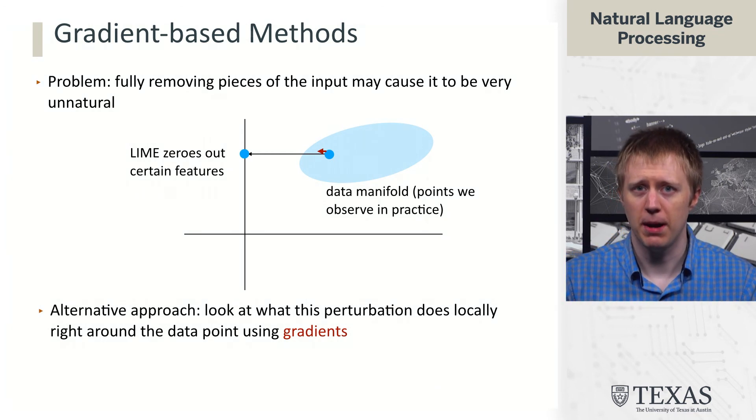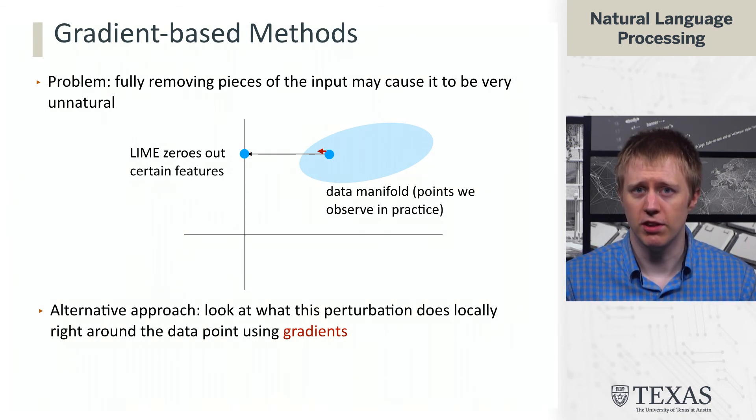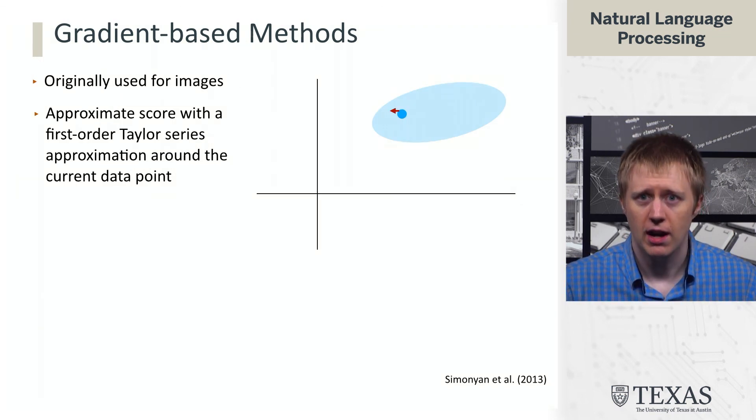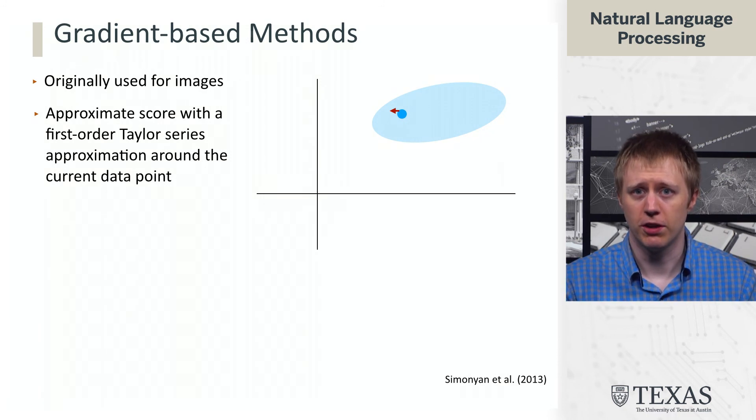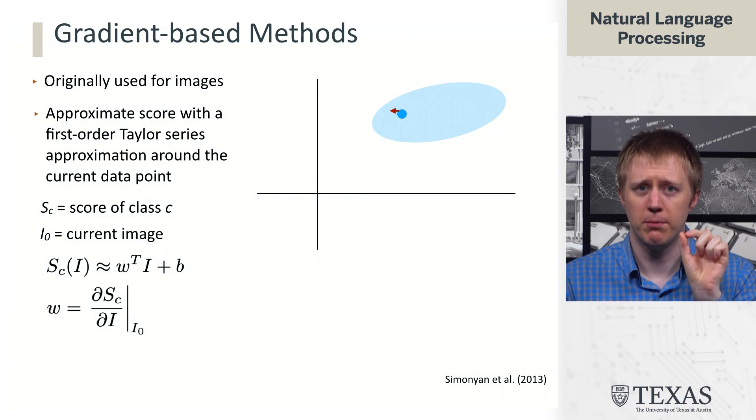So another approach is to think about sort of going even more local. Why don't we think about instead of zeroing out a whole patch of input features, what happens if we just think about a sort of very small perturbation? And one way we can do this is by taking gradients. So again, this method was kind of pioneered for computer vision back in 2013 by Simonyan et al. And the basic idea is that we're going to think of the current data point as yielding some prediction. And we're going to do a first order Taylor approximation of the scoring function around that point.